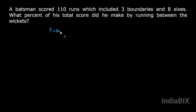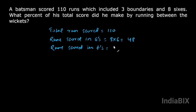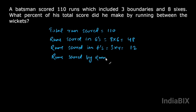Total runs scored by the batsman is 110. Runs scored in sixes: eight sixes, so eight into six is 48. Runs scored in fours: three boundaries, so three into four is 12.